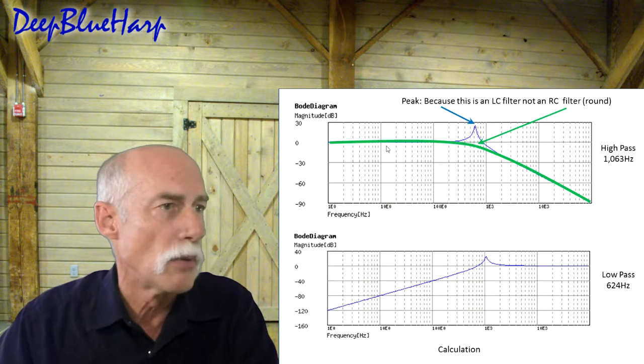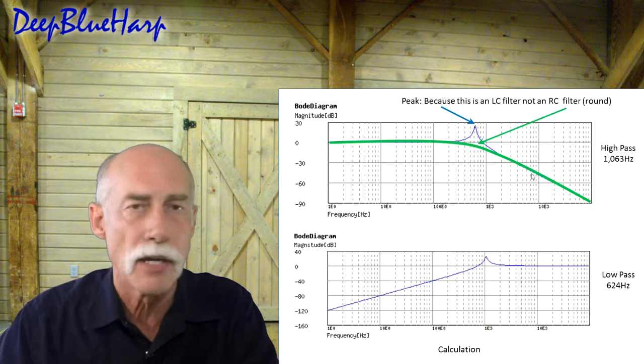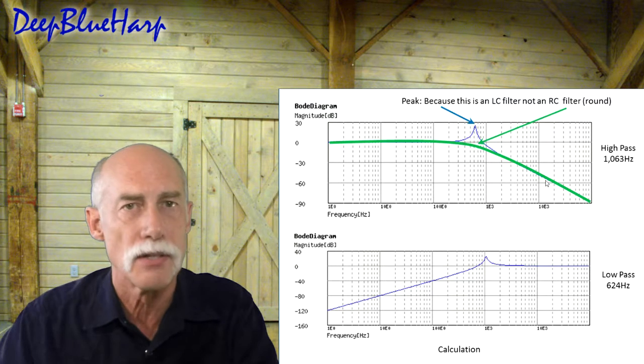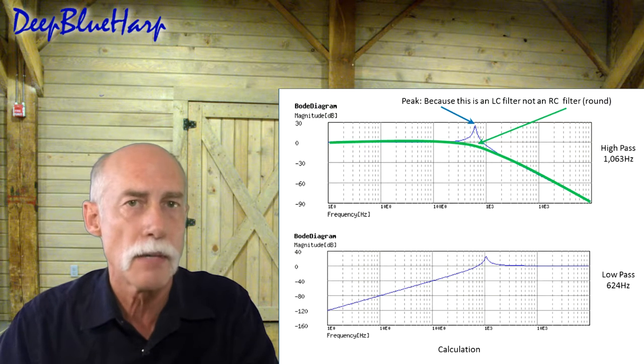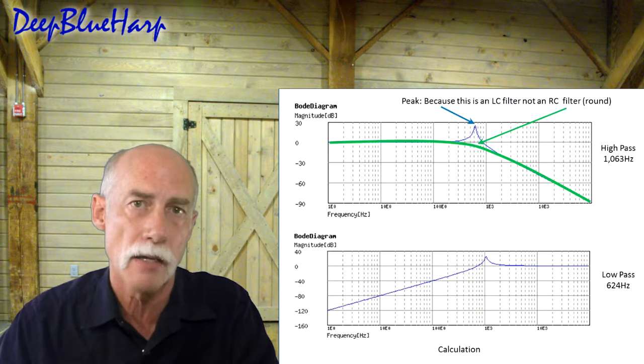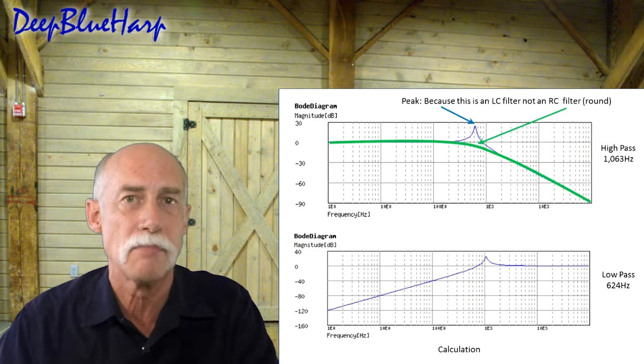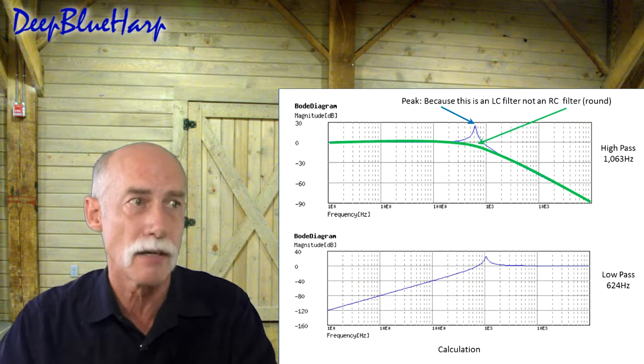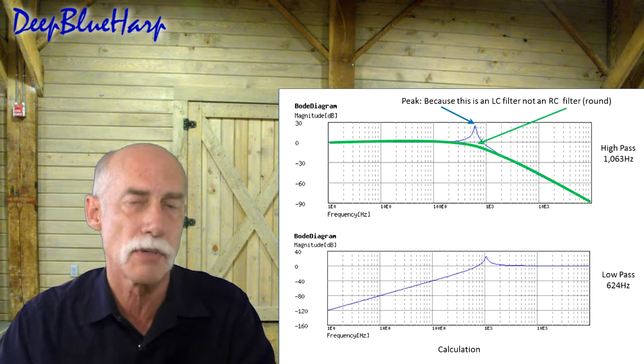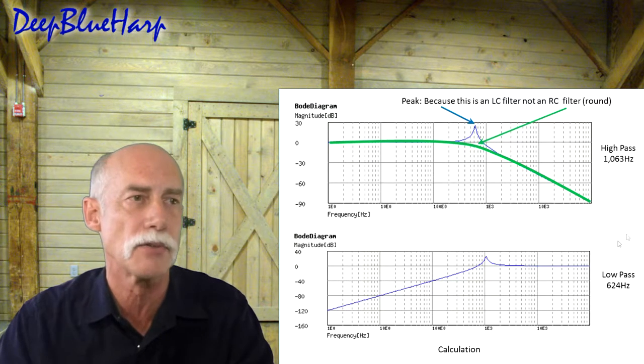This is what you're probably familiar with. That green line has a nice knee to it. It bends. That is an RC filter, very typical in any tone stack. This is not the same typical curve. You'll see a spike there at around 600 hertz because it's an LC filter, not an RC filter.